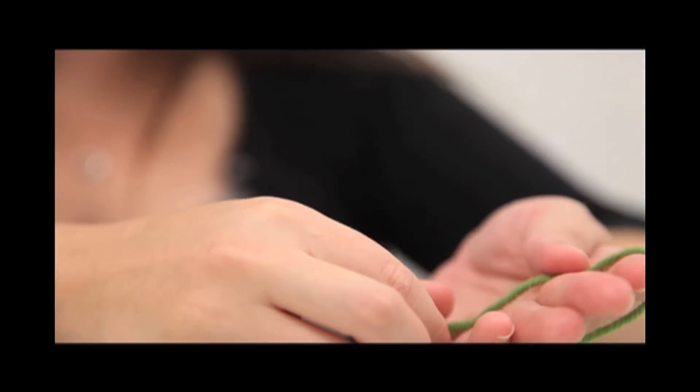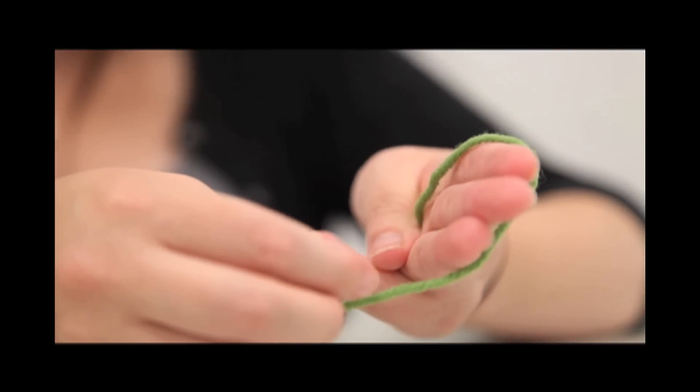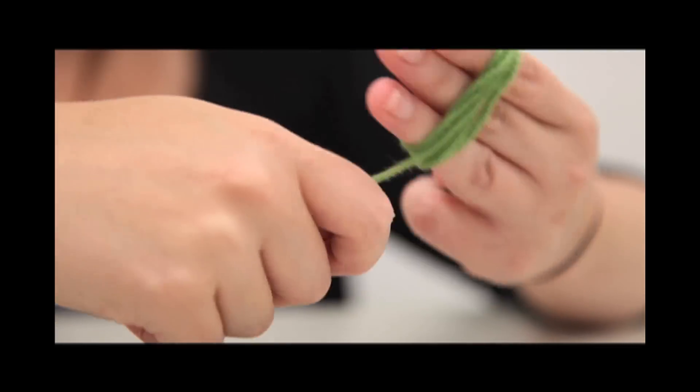To wind a center pull ball, you're going to secure the yarn in the palm of your hand with your thumb. Take three fingers and wind the yarn around those three fingers for a few times.